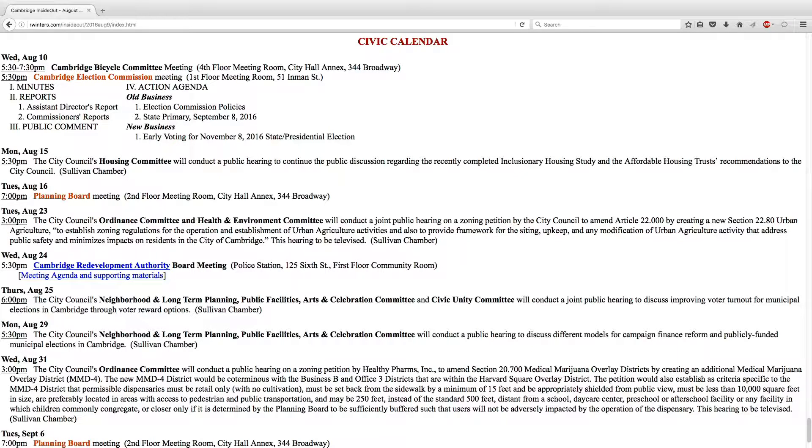Today's August 9th, and tomorrow the Cambridge Bicycle Committee is meeting at the fourth floor meeting room, City Hall Annex. Also tomorrow night at 5:30 is the Cambridge Election Commission meeting. They are talking about early voting for the November election, not for the September primary but for the November election.